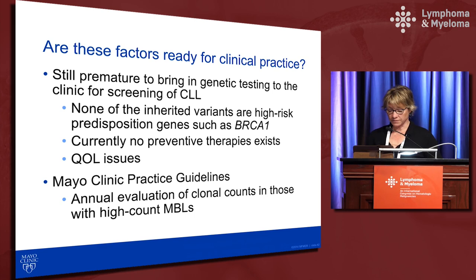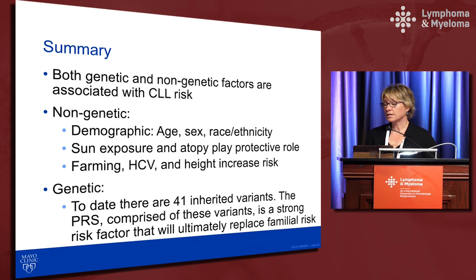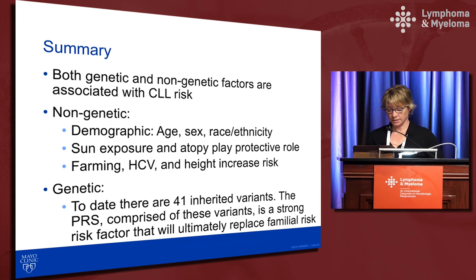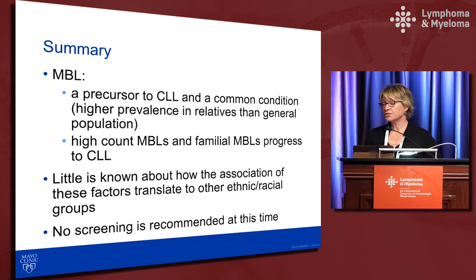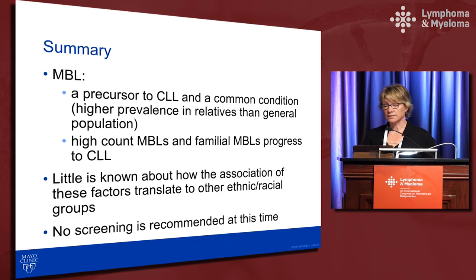In summary: both genetic and non-genetic factors are associated with CLL risk. Non-genetic factors include demographic variables (age, sex, ethnicity); sun exposure and atopy decrease risk; farming, hepatitis C viral infection, and height increase risk. There are currently 41 identified inherited genetic variants, with more expected as sample sizes grow. MBL is a common precursor to CLL, more prevalent in families than in the general population. High-count and familial MBLs progress to CLL. Little is known about how these risk factors apply to other ethnicities, and no screening is currently recommended.